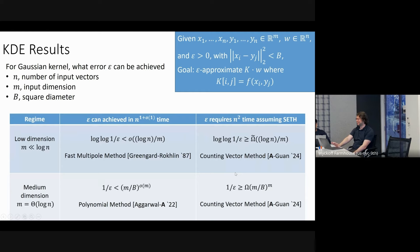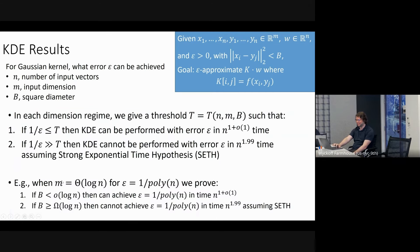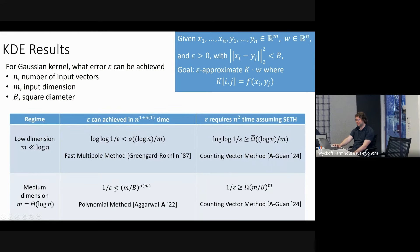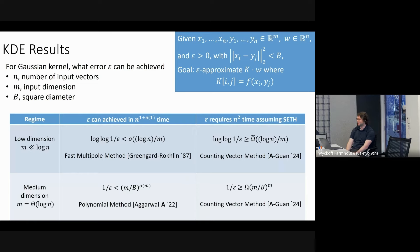In very low dimension, B doesn't end up mattering. Basically, there are space partitioning techniques usable in low dimension that remove the dependence on B, but they don't work once you get to moderate dimension. So far I've introduced KDE, told you about applications including attention, and stated our results.